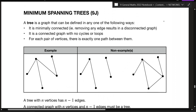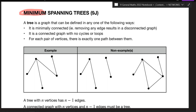This is the final chapter with content you have to learn. There is still one more chapter, 9k, but that's all just putting everything together and answering questions. For this chapter, 9j, what we're looking at is what you call a minimum spanning tree. The key word there is 'minimum' — you're trying to connect every single vertex in a graph using the smallest number of edges.